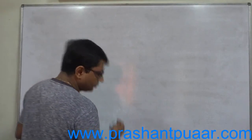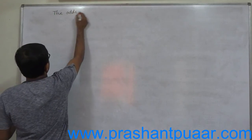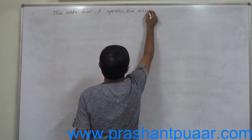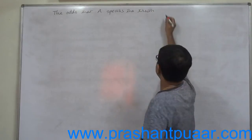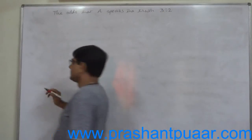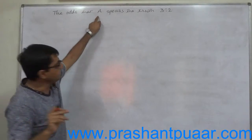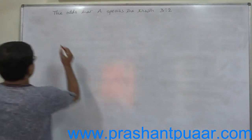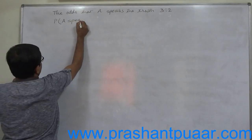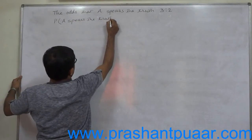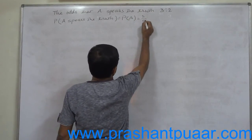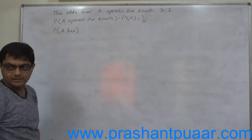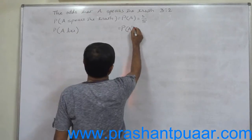The odds that A speaks the truth are 3 is to 2. Since there is no use of the word 'against', 3 is for speaking truth and 2 is for lying. Therefore, the probability that A speaks the truth, P(A), equals 3 by 5. The probability that A lies, P(A complement), equals 2 by 5.